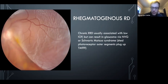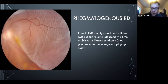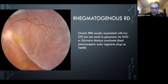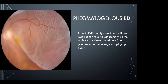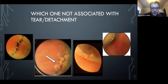Chronic RDs usually present with low pressure, but OCAPs is more likely to ask about ways they can present with high pressure. One cause is ischemic retina leading to NVE and neovascular glaucoma. There's also Schwartz-Matsuo syndrome, where detached retinas shed outer segments that float to the angle and plug it, causing glaucoma — possibly more theoretical but they like to ask about it.